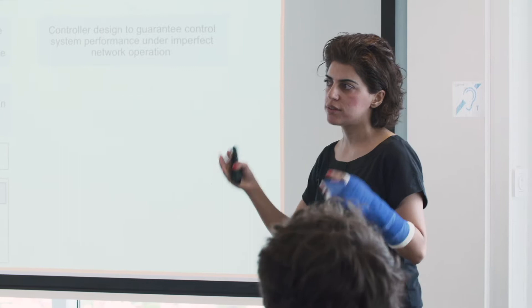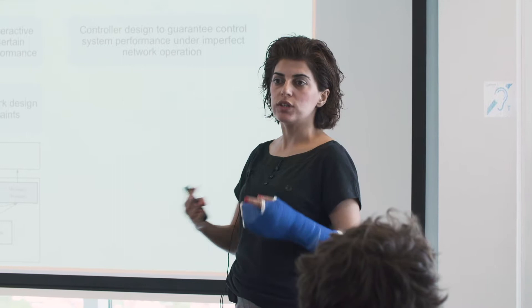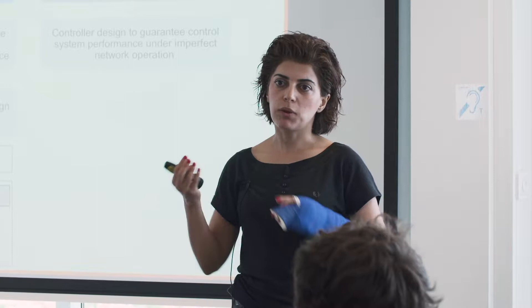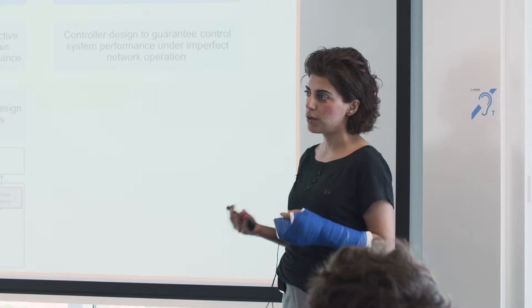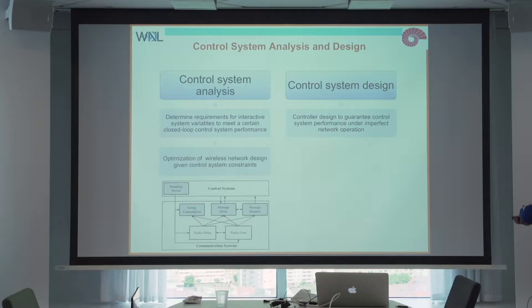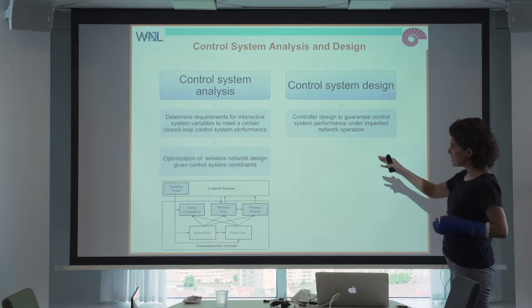In control system design, you can do analysis or design. In the analysis part, you want a certain control system performance, and to achieve that, you put restrictions on the values of the critical interactive variables: sampling period, message delay, and message dropout. You need a mathematical model for that, and this is really tough. There are very few models that take into account all of these variables.